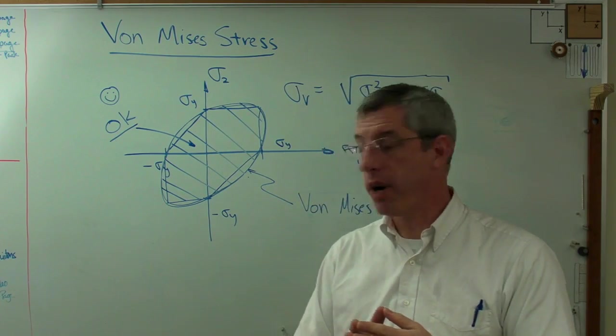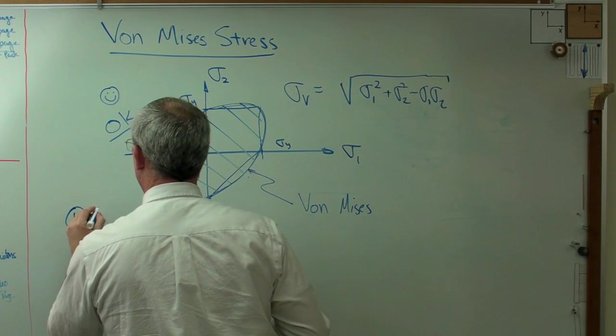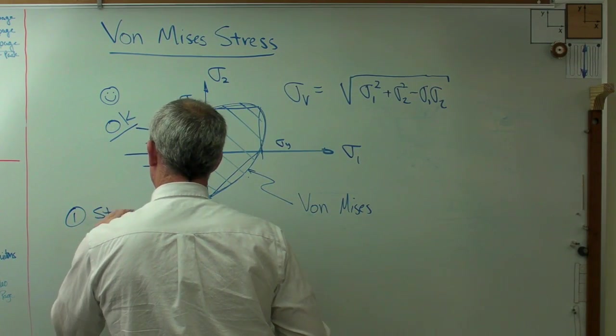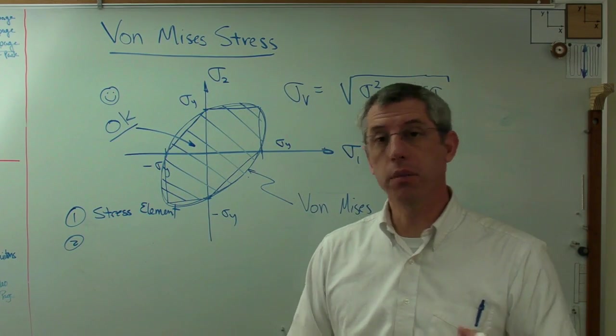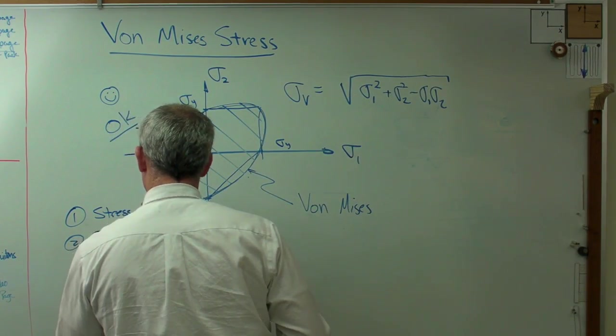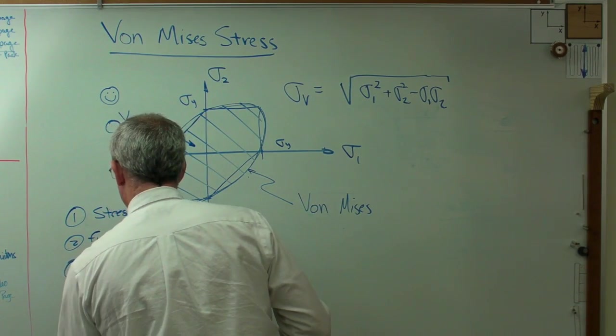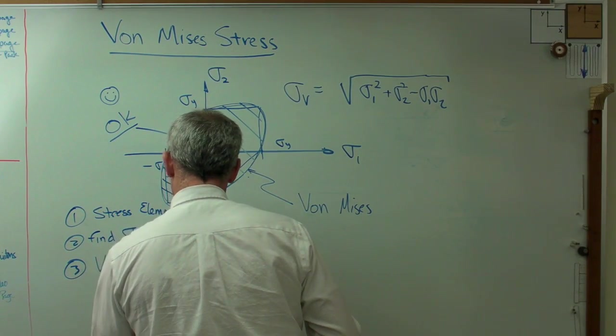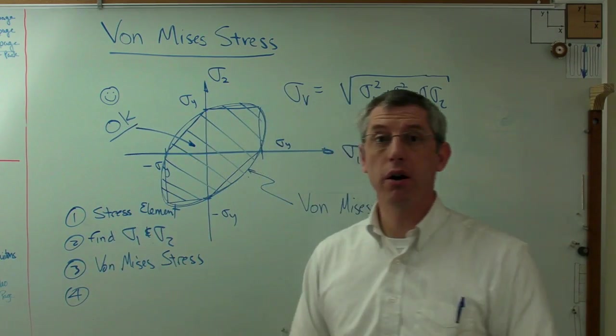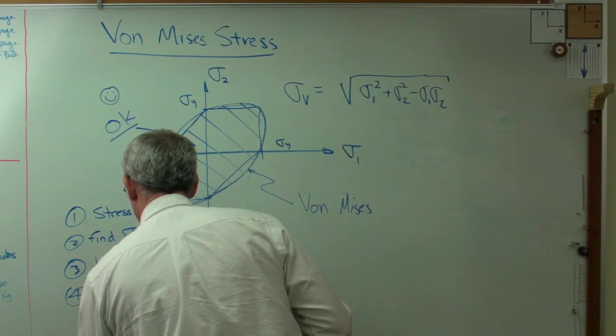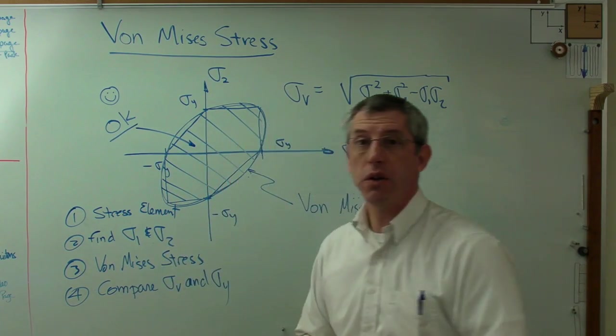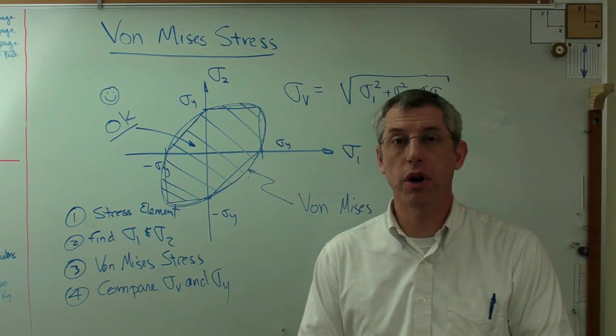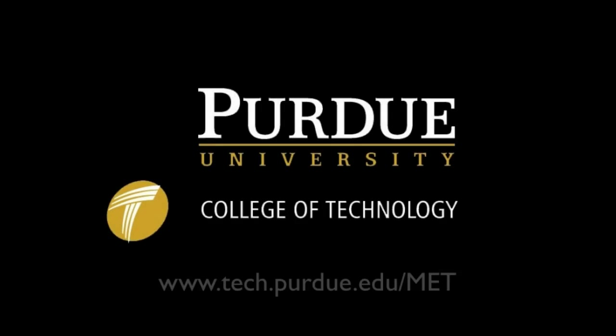The way we're going to do this is we start by number 1, we draw a stress element. Number 2, we're going to use Mohr's circle to figure out what sigma 1 and sigma 2 are. And number 3, we'll calculate von Mises stress. And number 4, we'll compare sigma v, the von Mises stress, with the yield stress. So that's the recipe we're going to follow. Hope this helps for a start, and I'll see you in the next video. We'll continue.